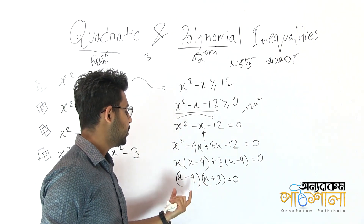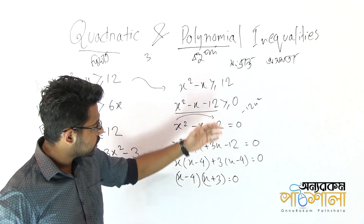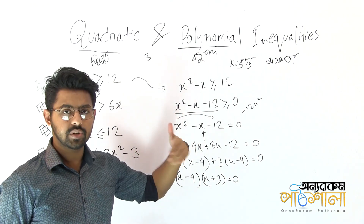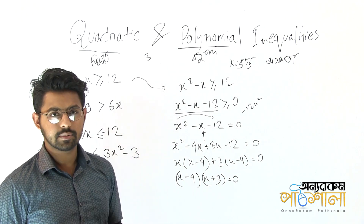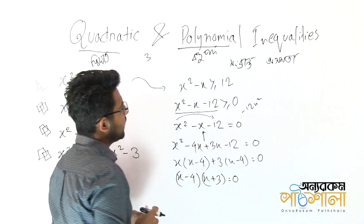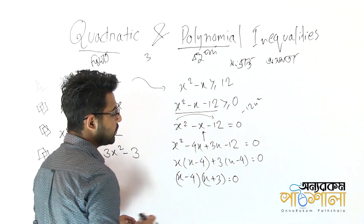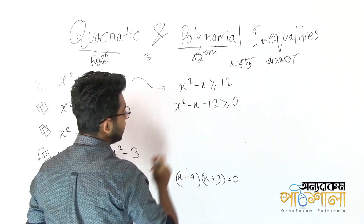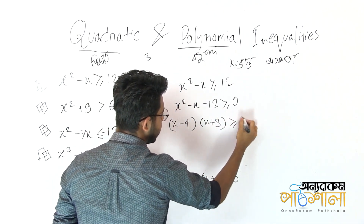We can write x² - x - 12 as (x - 4)(x + 3). The result is x minus 4 equals zero or x plus 3 equals zero. So we have (x - 4)(x + 3) ≥ 0.